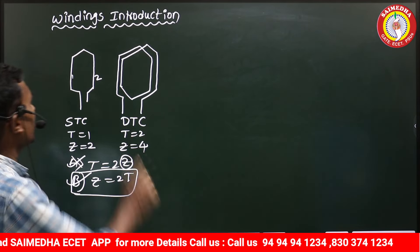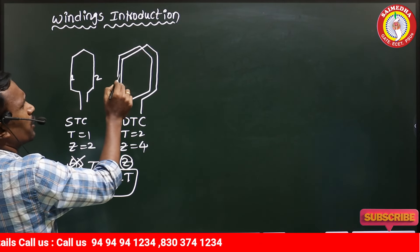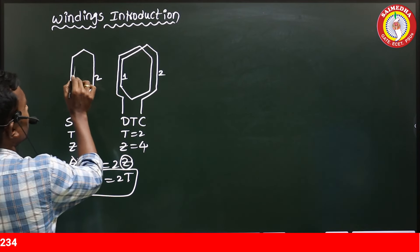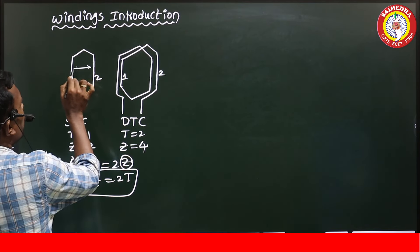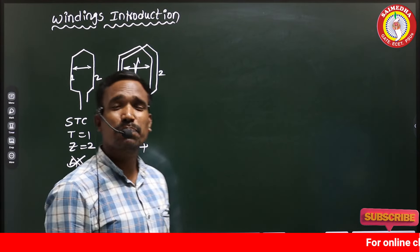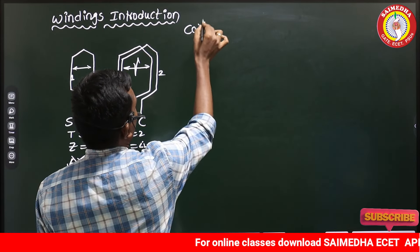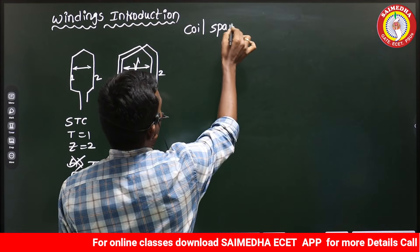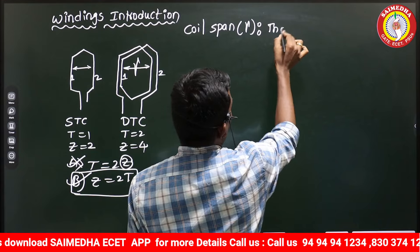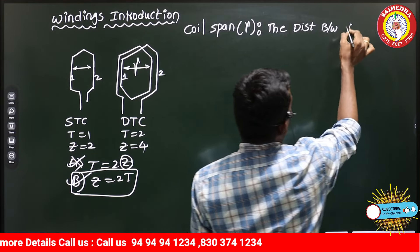This is one coil — coil side one and coil side two. This is another coil — coil side one and coil side two. The distance between the two coil sides of a coil is called the coil span, denoted as gamma (or beta in some textbooks).